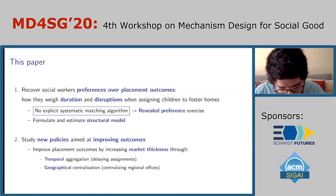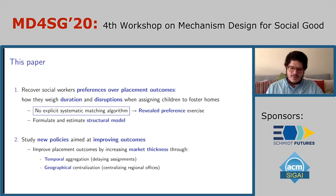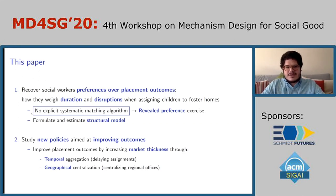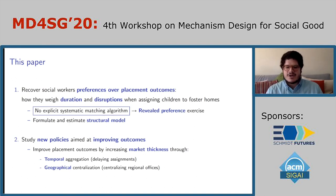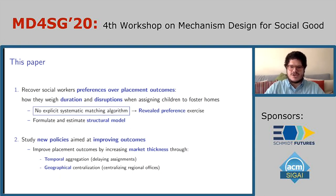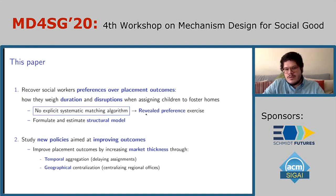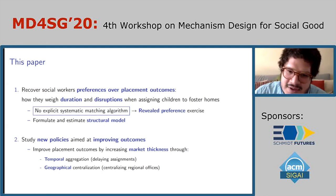In this paper, the main difference from foster care compared to other centralized matching markets is that there is no money — in the sense that there are no equilibrium prices. Also, there is no explicit systematic matching algorithm. It's a centralized matching market in the sense that social workers decide which child goes to which foster home, but they do this on a daily basis as children enter the system, looking at cases on a case-by-case basis, talking with children and families. To study matching, I take a revealed preference approach and rationalize the choices made by social workers using a choice model.